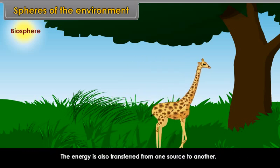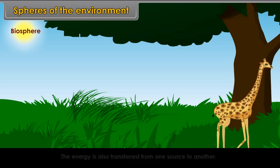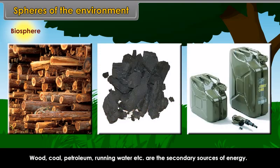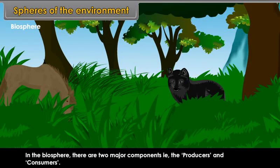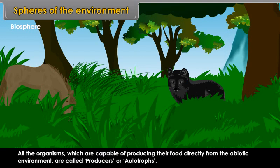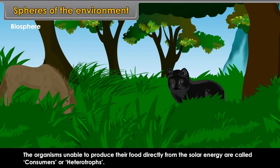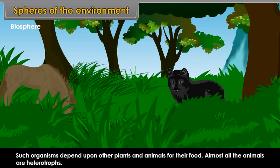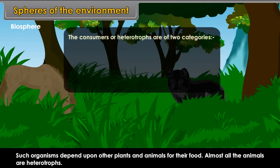Wood, coal, petroleum, running water, etc. are the secondary sources of energy. In the biosphere, there are two major components: the producers and consumers. All the organisms which are capable of producing their food directly from the abiotic environment are called producers or autotrophs. The organisms unable to produce their food directly from solar energy are called consumers or heterotrophs. Such organisms depend upon other plants and animals for their food. Almost all animals are heterotrophs. The consumers or heterotrophs are of two categories: herbivores and carnivores.